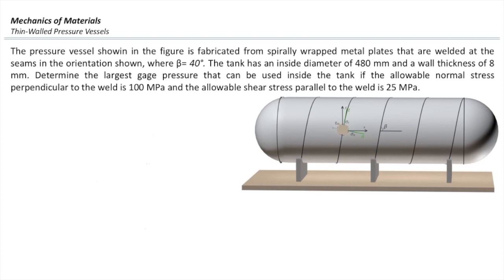Determine the largest gauge pressure that can be used inside the tank if the allowable normal stress perpendicular to the weld is 100 MPa and the allowable shear stress parallel to the weld is 25 MPa. This is a very practical problem because in the real world, most pressure vessels are made by welding the plates as shown in this figure. And the weak point for those structures is the welding, is the seams.